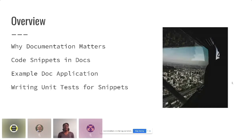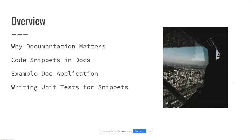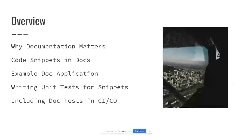Then we'll talk about writing unit tests for snippets. If you're more on the documentation writing side, you probably won't have to worry about writing unit tests. But for those of you who are developers and might be involved with more of the code activities, this is probably where you'll want to see how things are working. Then we'll talk about including your doc tests in a CI/CD pipeline — that's where the automated checks come in. We'll wrap up with just a few key takeaways.